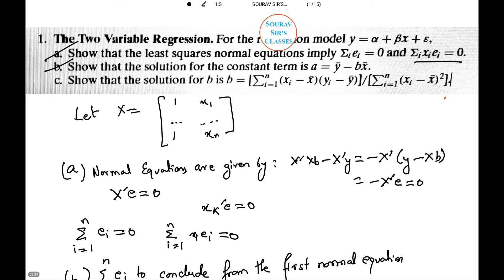Let's see part c. We need to show that the solution for b is b equals summation i from 1 to n (x_i minus x bar)(y_i minus y bar) divided by summation i from 1 to n (x_i minus x bar)^2.